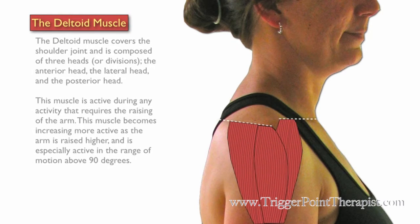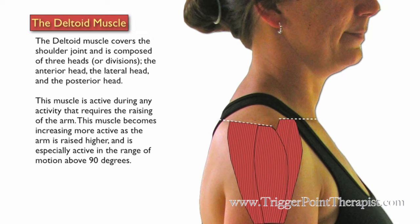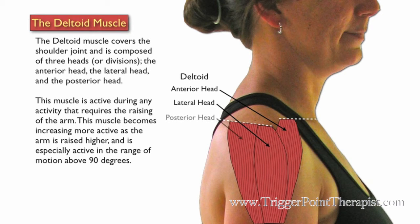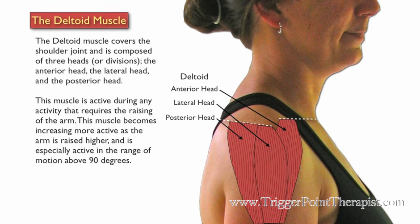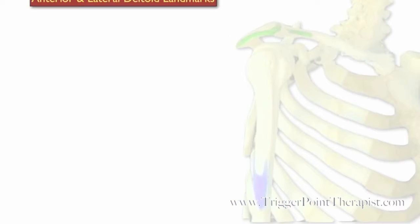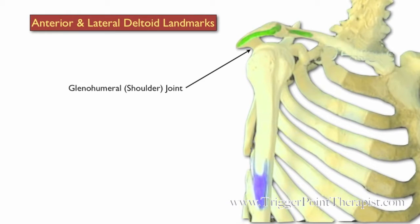The deltoid muscle covers most of the shoulder joint and is composed of three heads or divisions: the anterior head, the lateral head, and the posterior head. This muscle is active during any movement that requires the raising of the arm. It becomes increasingly more active as the arm is raised higher, and is especially active in the range of motion above 90 degrees.